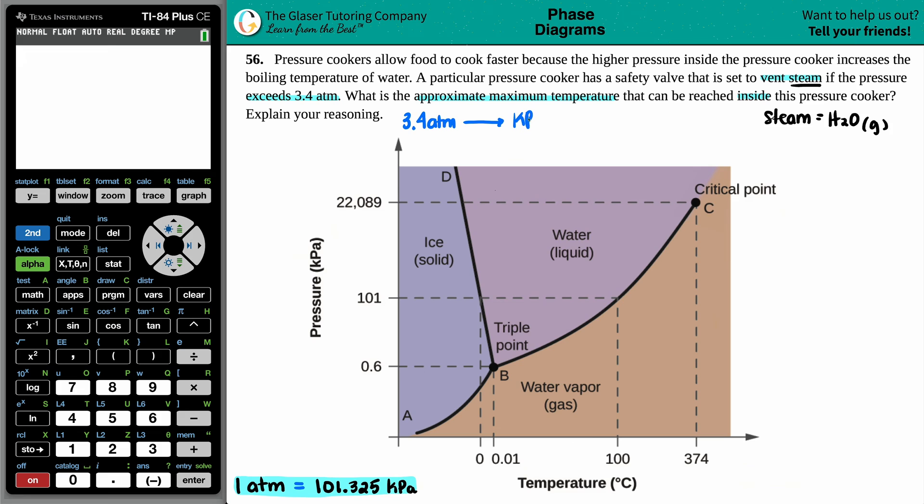Now this is just using dimensional analysis, right? We could go about it the longer way: 3.4 atm. If we are using dimensional analysis, remember times by a ratio, put the unit that you don't want on the bottom. So atm goes on the bottom, kilopascals go up on top.